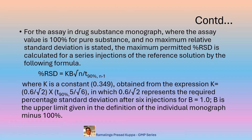If the upper limit is 102%, then the B value will be 2. If the upper limit is 102.5%, the value for B will be 2.5. And similarly, if the upper limit is 103%, B will be 3. Respective percent RSDs are provided in the table in the next slide for replicate injections between 3 and 6.